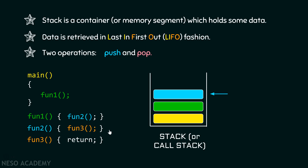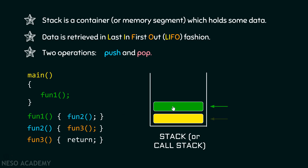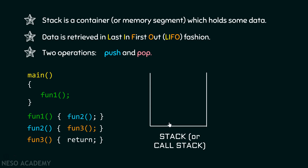After returning from fun3, suppose the compiler encounters another return statement in fun2. This means fun2 is also over, so the compiler pops fun2 out of the stack and control returns to fun1. Again, when fun1 encounters its return statement, it gets popped out of the stack and control returns to main. After main completes, it also pops out of the stack. An empty stack indicates all functions have finished execution.